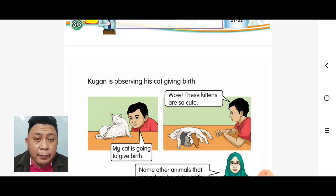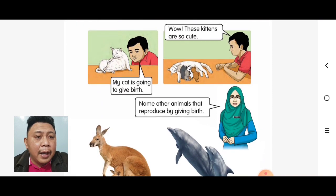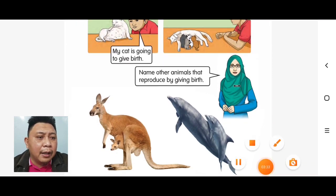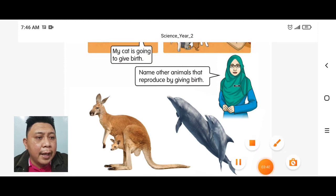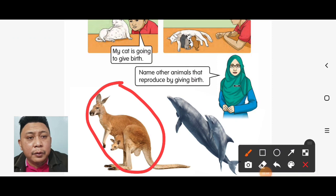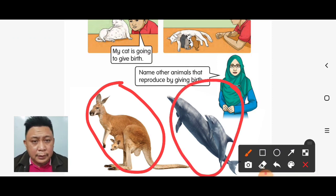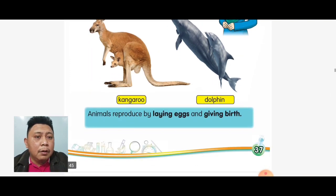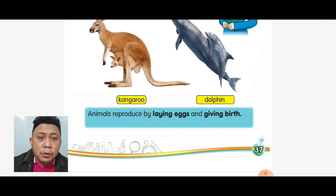So the first example of giving birth is the cat. Now, can you name the other animals that reproduce by giving birth? The first one is kangaroo, and the next one is dolphins.